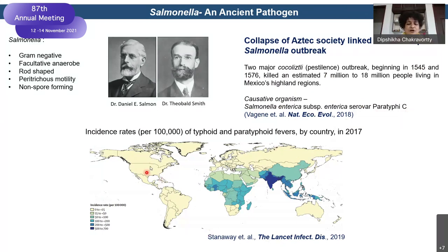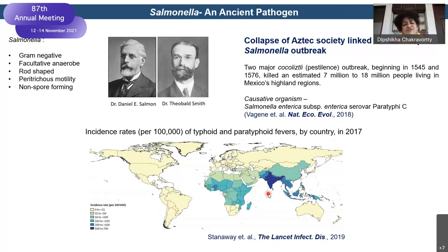Looking at the global picture of the spread of typhoid and paratyphoid fever from the Lancet Infectious Disease Global Network, you can see that India and other Asian regions are completely highlighted in blue, indicating very high incidences of typhoid and paratyphoid fever. This now also includes Africa, where cases of typhoid and paratyphoid fever, along with the Salmonella invasive phenotype, are coming up.